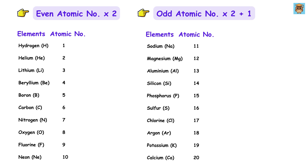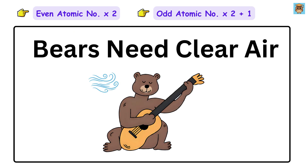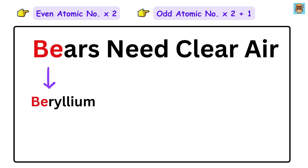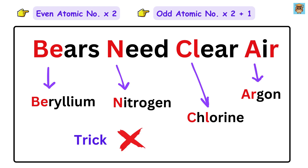It's that simple. But we all know that chemistry is filled with exceptions, so you need to remember this fun line: Bears need clean air. This stands for beryllium (Be), then nitrogen (N), then chlorine (Cl), and argon (Ar). These are the elements where the trick does not work, so you will have to memorize them.